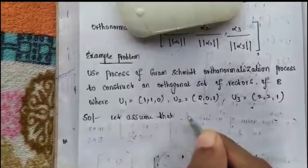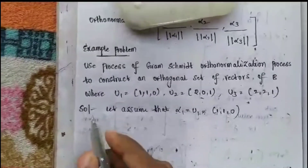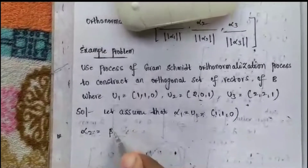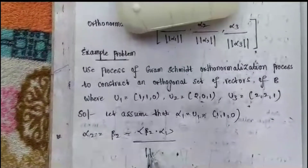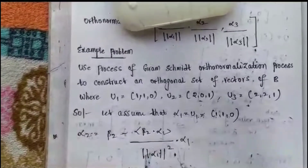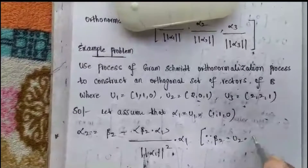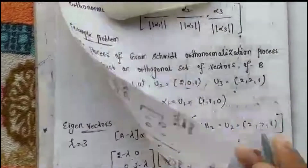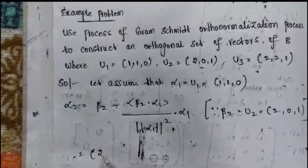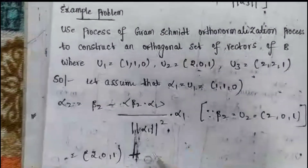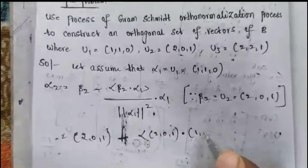Let us assume α1 = u1 = (1, 1, 0). α2 equals β2 minus (β2 · α1 / |α1|²) into α1. Here β2 = u2 = (2, 0, 1). So α2 = (2, 0, 1) minus [(2, 0, 1) · (1, 1, 0)] divided by |α1|² into α1.